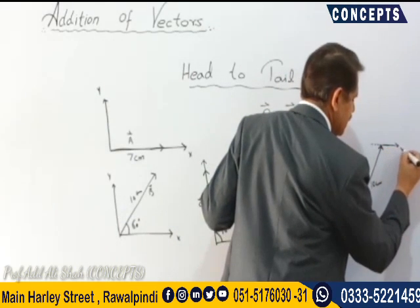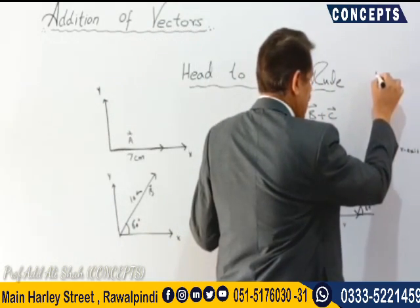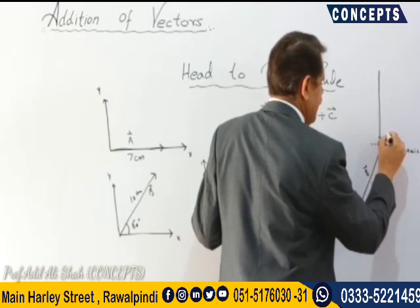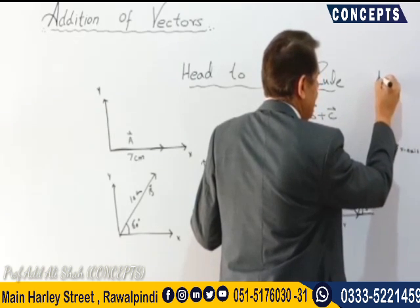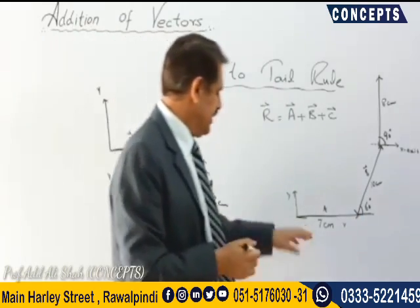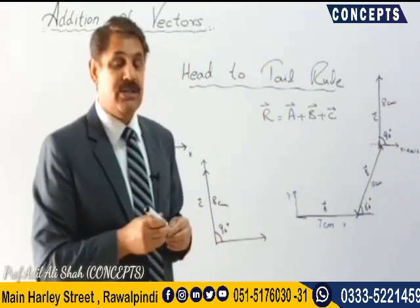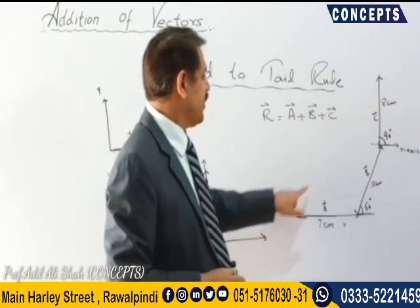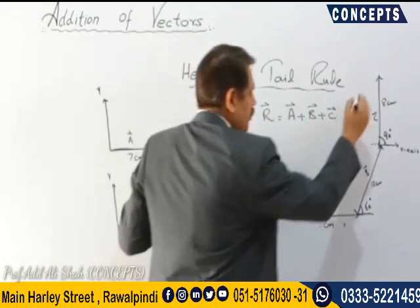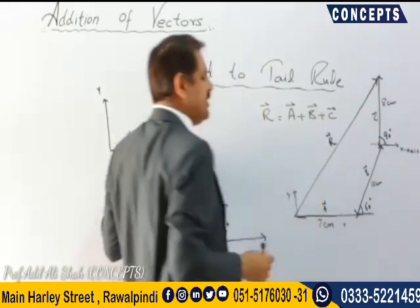These are the representative lines of vectors A, B, and C drawn head to tail. The resultant vector R is obtained by joining the tail of the first vector to the head of the last vector. This line from the tail of A to the head of C is your resultant vector R.